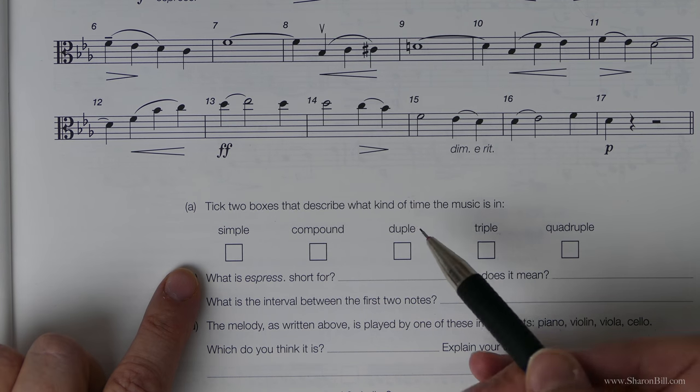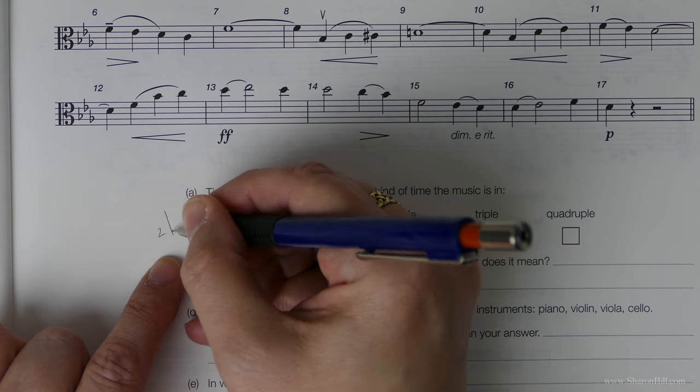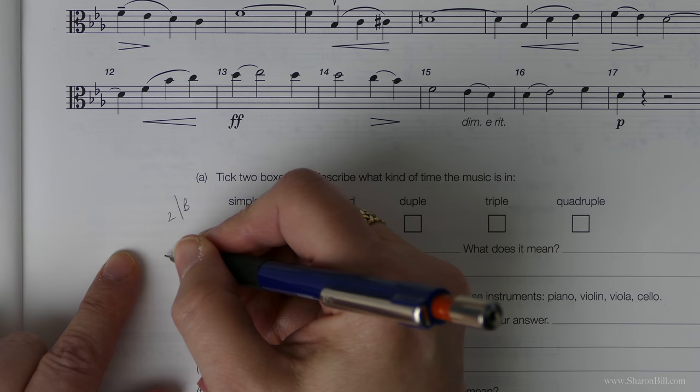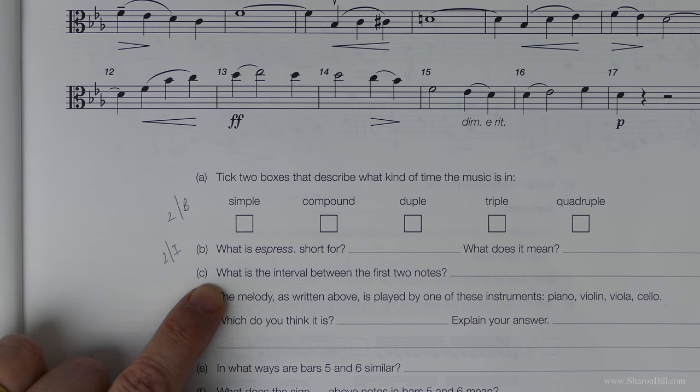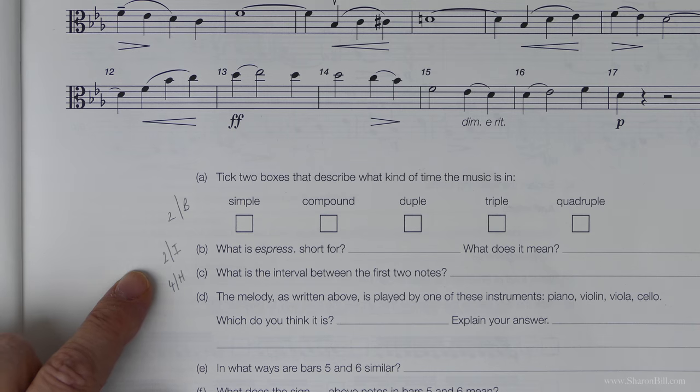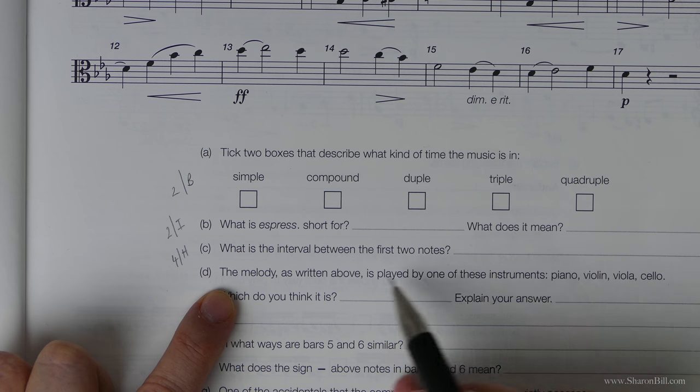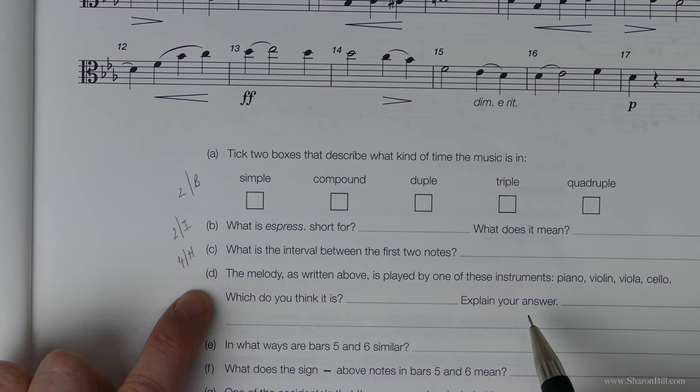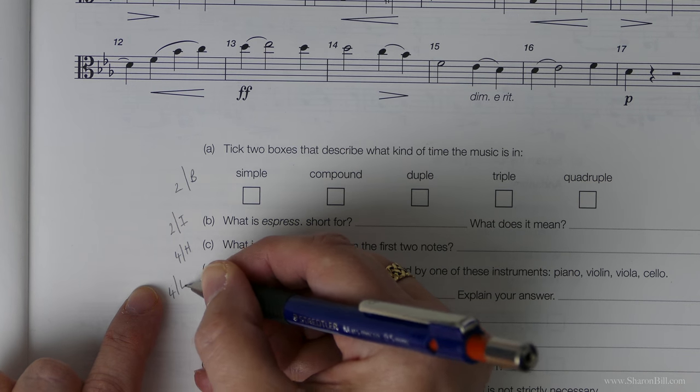We're referring to this section of music. All the questions will relate to this. They're asking us what time the music is in - you'll find this first discussed in grade 2, section B. Here we have an Italian performance direction in grade 2, section I. Intervals we come across most recently in grade 4, section H. The melody as written above is played by one of these instruments, and you'll find the clues in grade 4, section L.